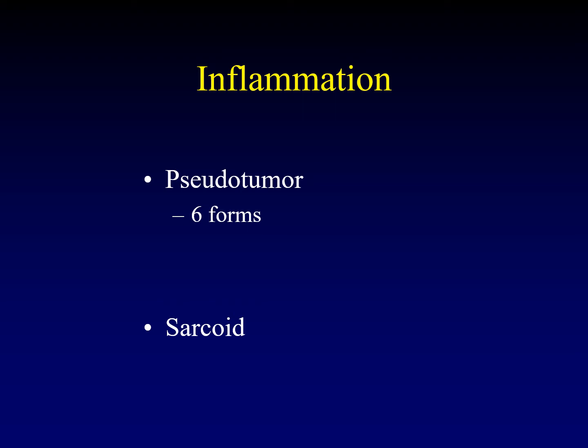Now let's talk about non-infectious inflammatory diseases. Let's return to pseudotumor and mention sarcoid briefly. There are in fact six different forms of pseudotumor — three associated with particular anatomical structures, and three geographic. The most common form is the myositis form. You can also get a dacryoadenitis form in which the lacrimal gland is inflamed, and a neuritis form — strictly speaking a perineuritis, because the inflammation is around the optic nerve, not in it, but rather in the nerve sheath and surrounding structures.